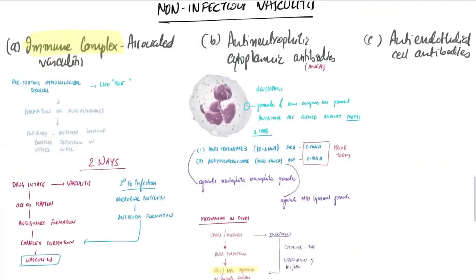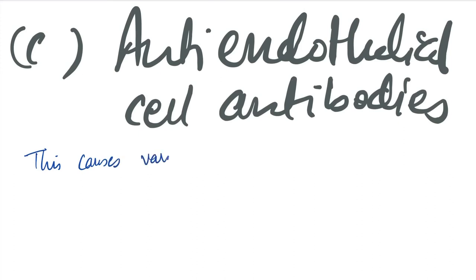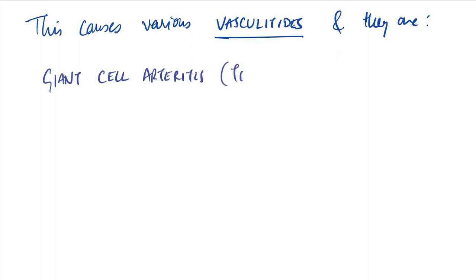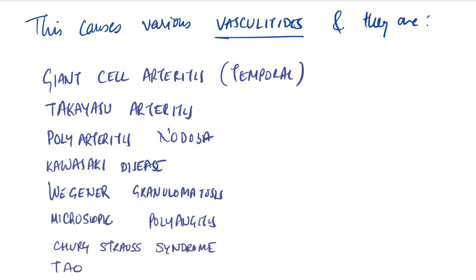For anti-endothelial cell antibodies, there are various vasculitis types including giant cell arteritis, Takayasu arteritis, polyarteritis nodosa, Kawasaki disease, Wegener's granulomatosis, microscopic polyangiitis, Churg-Strauss syndrome, and Buerger's disease. That's all about vasculitis. Thanks for watching.